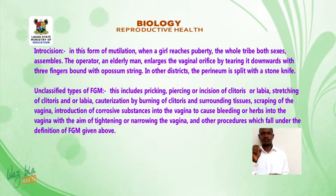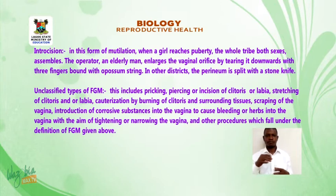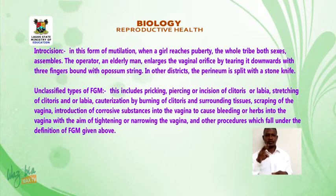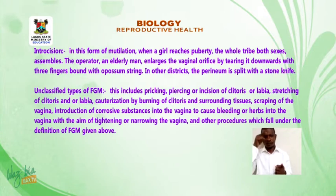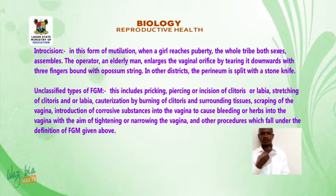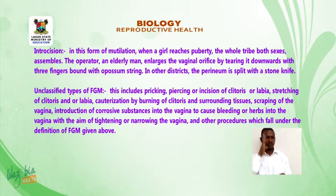Unclassified FGM also includes cauterization by burning of the clitoris and surrounding tissues, scraping of the vagina, introduction of corrosive substances into the vagina to cause bleeding or abscesses, narrowing of the vagina, and other procedures which fall under the definition of FGM as given above.